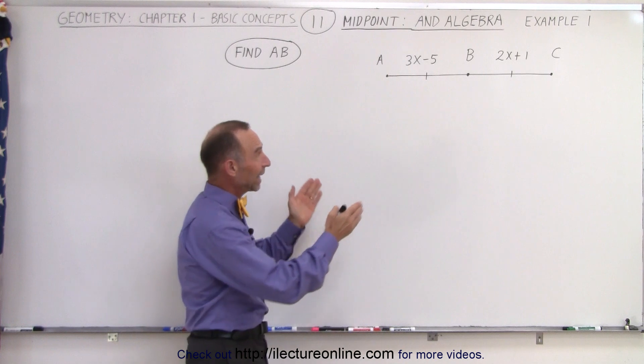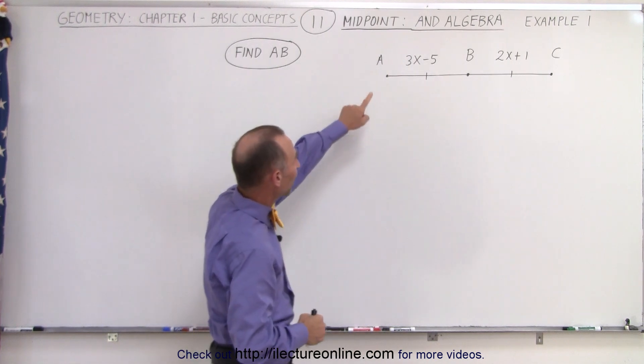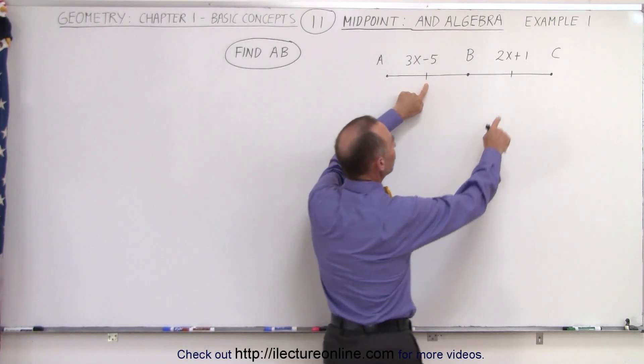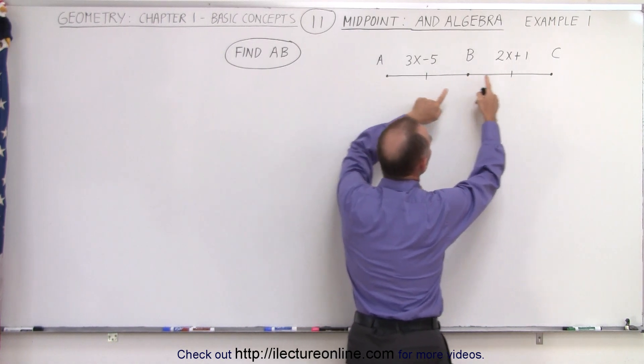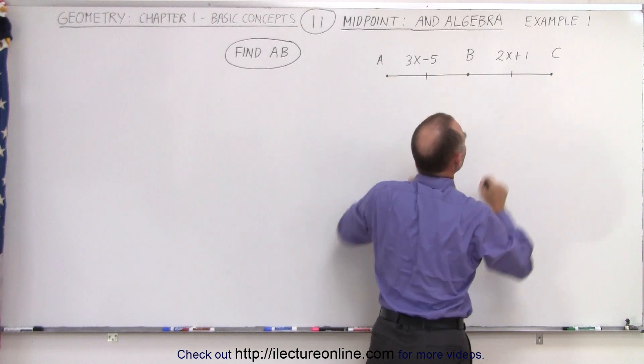They've given us a line segment and three points A, B, and C. Because of the indications here, we can see that the length of line segment AB must equal the length of line segment BC.